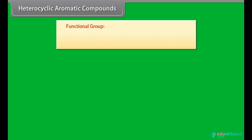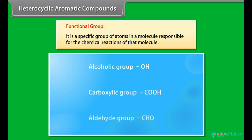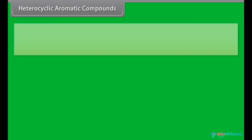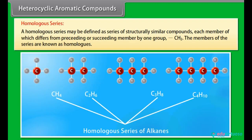Functional group: it is a specific group of atoms in a molecule responsible for the chemical reactions of that molecule. Homologous series: a homologous series may be defined as a series of structurally similar compounds, each member of which differs from the preceding or succeeding member by one CH2 group. The members of the series are known as homologs.